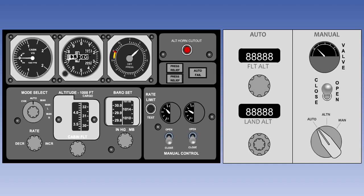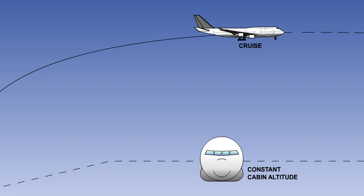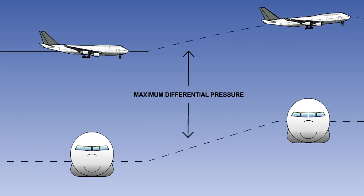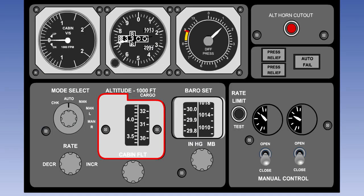Whatever type of controller is used, it will receive signals informing it of both the cabin and ambient pressures. The controller has three functions: it will control the cabin altitude, it will control the cabin altitude rate of change, and it will limit the maximum differential pressure. Old generation controllers have controls for selecting the required cabin altitude and cabin altitude rate of change, and they send signals to the electric motor driven outflow valves.